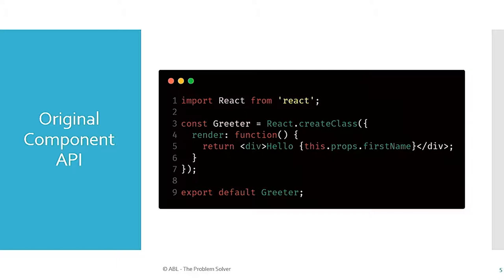Way back when React first shipped, we had this API: React.createClass. It passed in an object with a render function like this, and probably some more functions depending on your component. And life was good — we could use mixins, we would have auto-binding, and it was kind of the React-specific way.